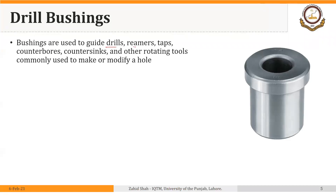Bushings are used to guide drills, reamers, taps, counterbores, countersinks, and other rotating tools commonly used to make or modify a hole. Jigs are generally used on drilling presses or drilling machines. By guiding the tool to the required position, we mean that instead of marking the point on the workpiece where a hole is to be made, these bushings are installed in the body of the jig such that once a drill or other hole-making tool moves through the bushing and performs the operation, that operation is performed at the required position on the part.